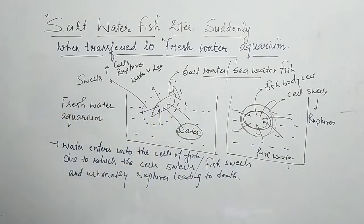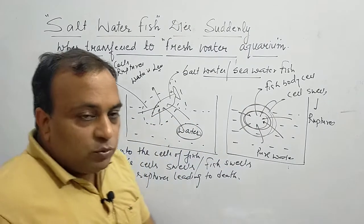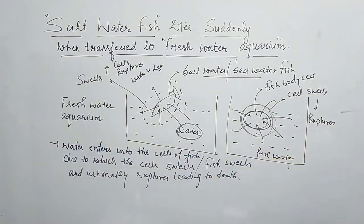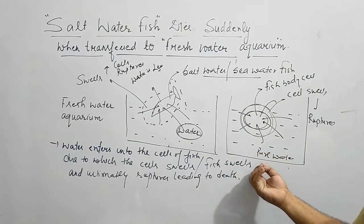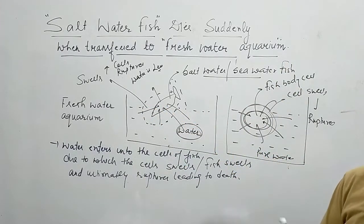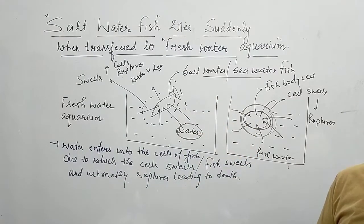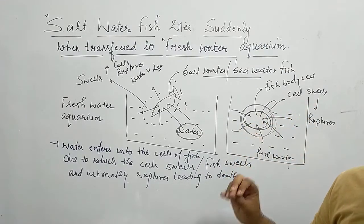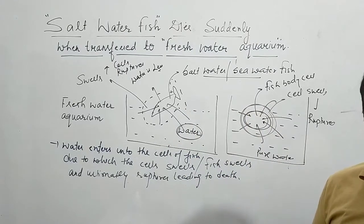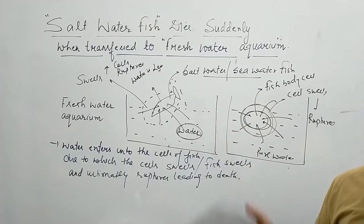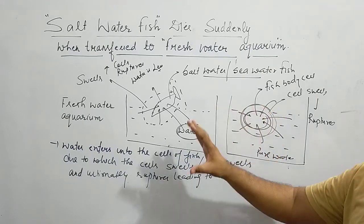This is the phenomenon explained on the basis of osmosis. When a salt water or sea water fish is placed in a fresh water aquarium, water enters into the cells of the fish, the fish swells, and ultimately ruptures, leading to the death of the fish. All these phenomena are based on osmosis. Osmosis is the movement of solvent from solvent to solution, or from low concentrated solution to high concentrated solution.